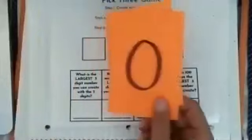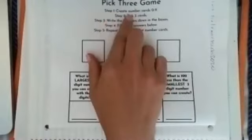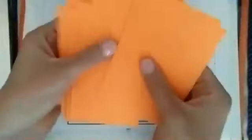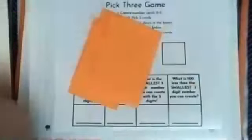Once you made these cards, you could start the game. So step one is to create the number cards. Step two is to pick three cards. So you flip them over, you shuffle them up, and you say, okay, I'm going to pick this card, this card, and this card. So I picked three cards. I set the rest of them aside.